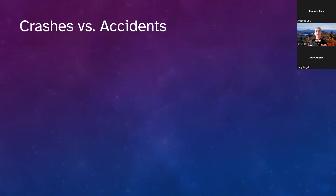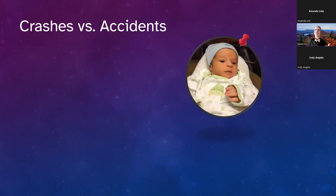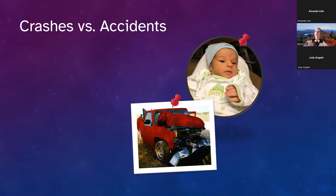Before we get started, let's make sure we're all on the same page about crashes versus accidents. We used to call them accidents, but we're calling them crashes now. With accidents, we assign blame; with a crash, it's just an event — we worry about causes later. A crash is the term we use for incidents involving vehicles, pedestrians, bicycles, buses, or trucks.